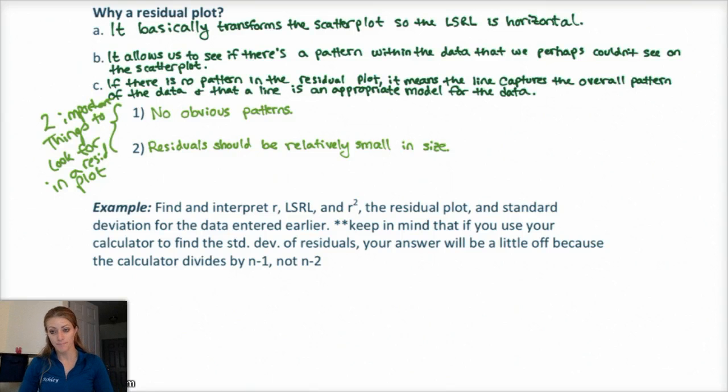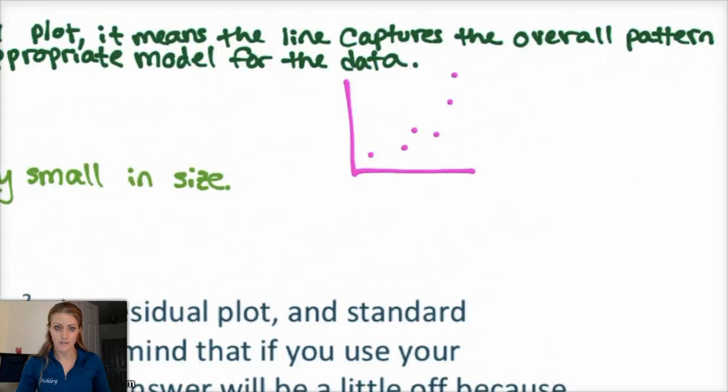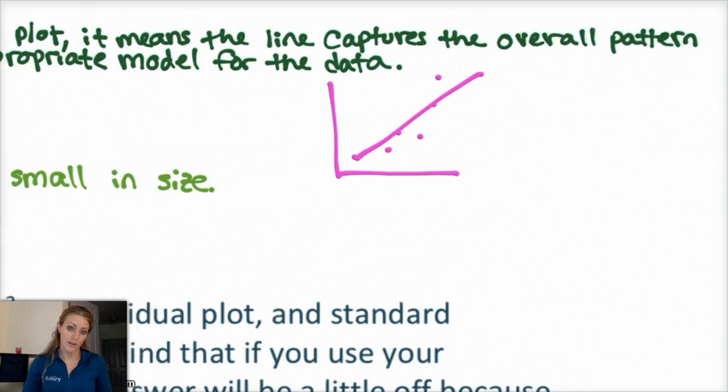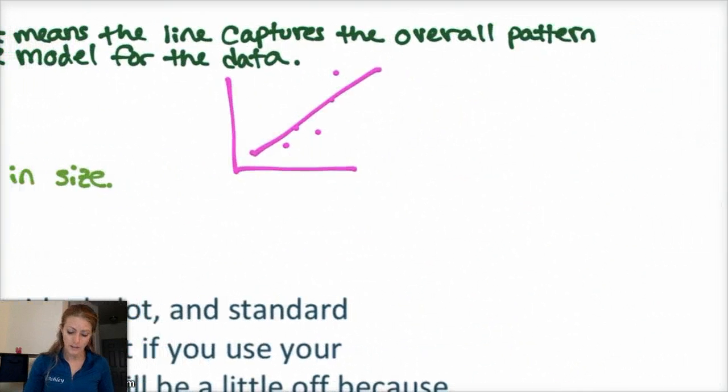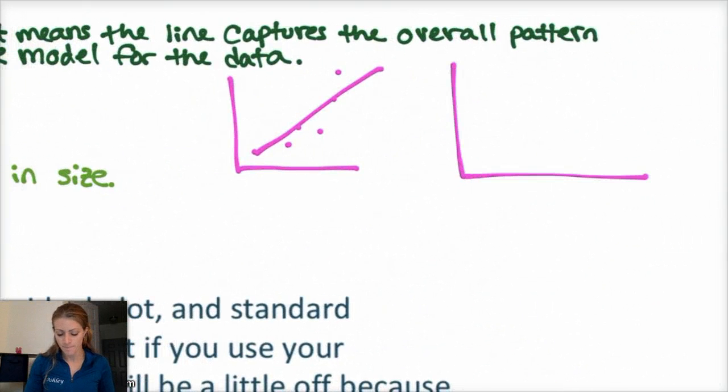Okay, so for example, say you graph two variables and the scatter plot looks something like this. You might make a line of best fit like this. Okay, that's pretty good. Fits the data pretty well. Looks like a line. But then when you actually graph the residual plot, it looks something like this. Okay. Or something like that. Right?